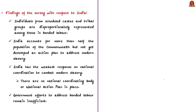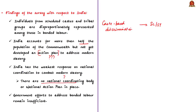With reference to India, the report states that caste-based discrimination is one of the biggest problems — many victims of bonded labor are individuals from Scheduled Castes and Scheduled Tribes. India accounts for more than half the population of the entire Commonwealth, yet has not developed an action plan to address modern slavery, and there is no national coordinating body or national action plan in place. Therefore, the report states that India has the weakest response on this matter, and government efforts to address bonded labor remain insufficient.